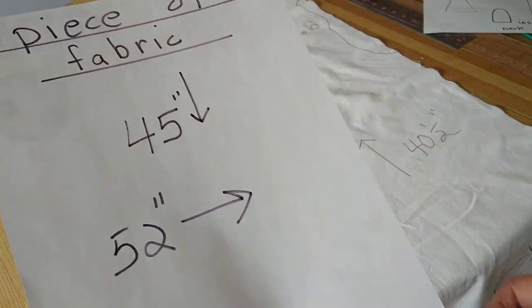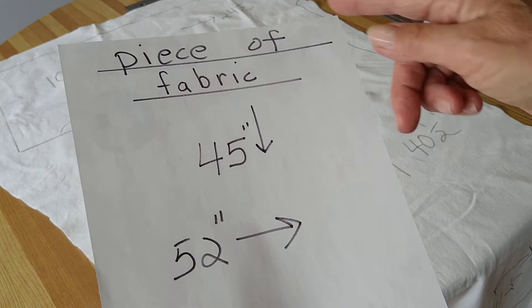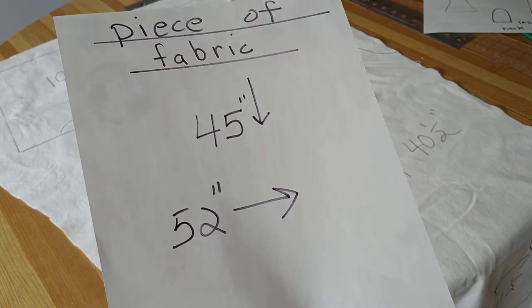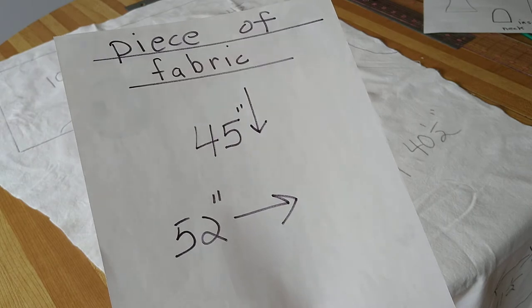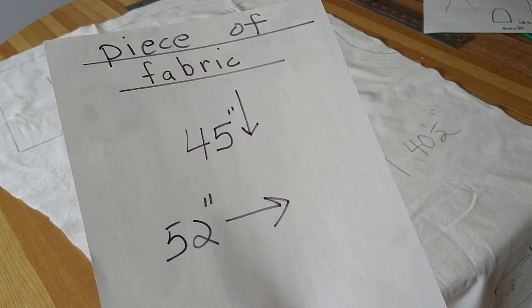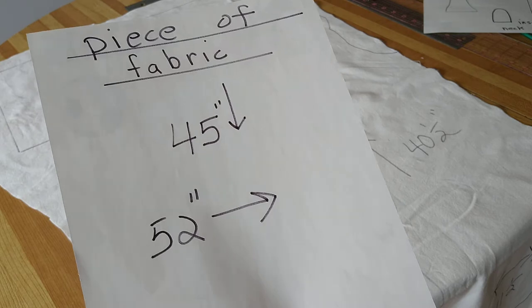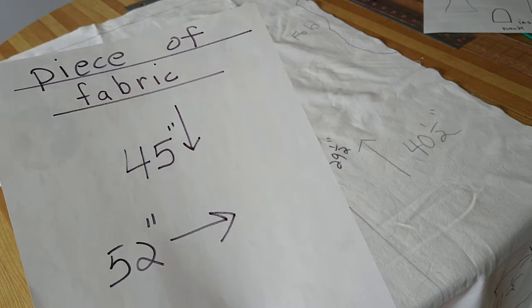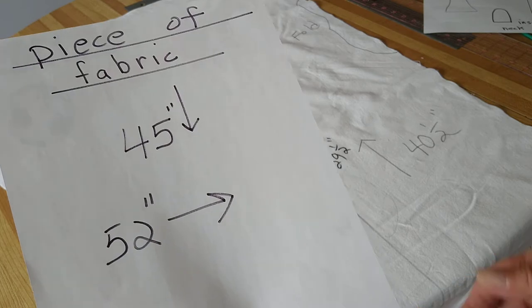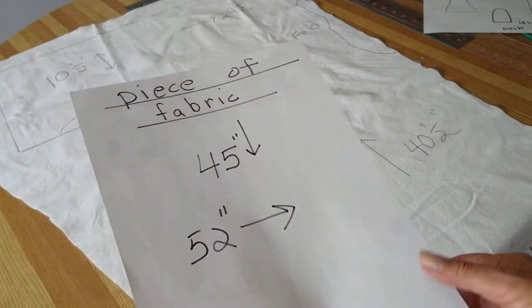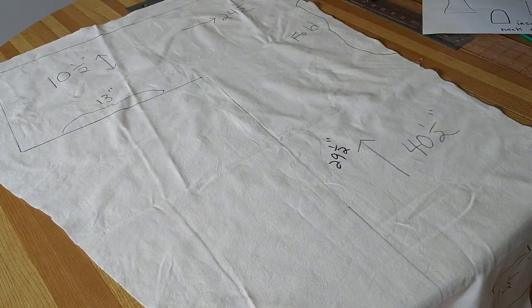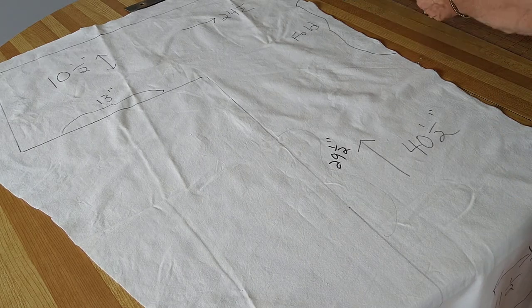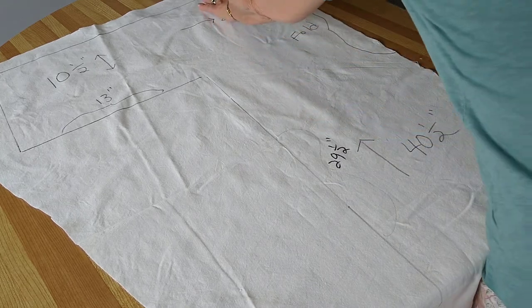We'll need a piece of fabric 45 inches long by 52 across. Take the fabric and fold it in half. Because the sleeve and the length is wider, fold the wide part. The 52 inches will be 26. It's on the fold line here.